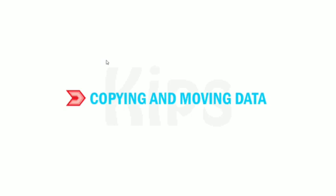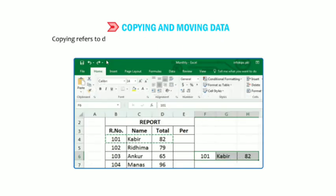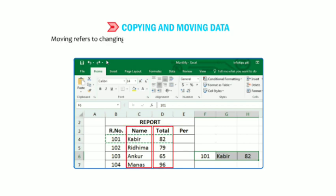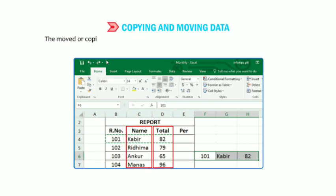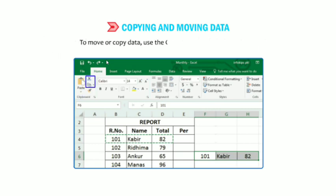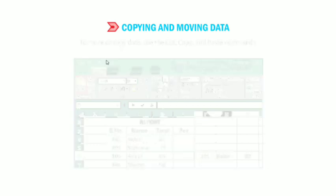Now, copying and moving data: copying refers to duplicating data — text, numbers, or formulae — either in the same worksheet or in a different one. Moving refers to changing the position of data either in the same worksheet or in a different worksheet. The moved or copied data is stored temporarily in a location in computer memory called the clipboard. To move or copy data, use the Cut, Copy, and Paste commands.